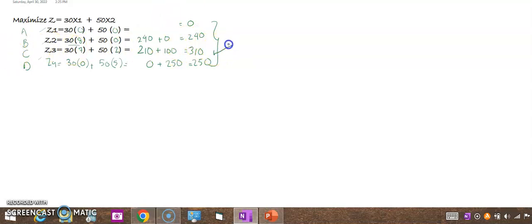This simply suggests that we suggest to the company, the firm, or tailor that they prepare or make 7 dresses and 2 suits to make 310 dollars or rupees, whatever, per day. This is our final citation to the tailor based on our calculations.